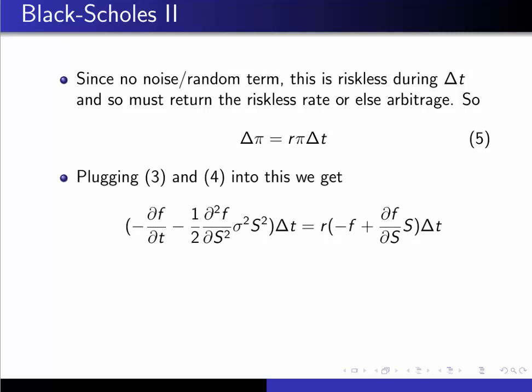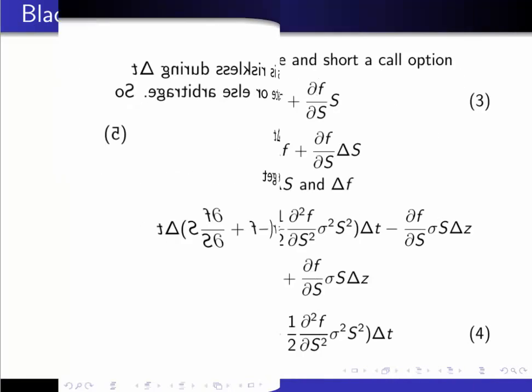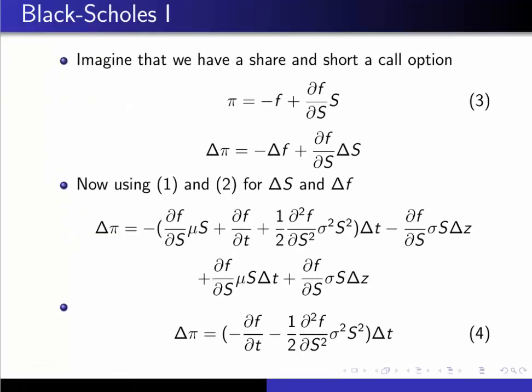Then plugging three and four into this - so three and four were expressions for Delta Pi and Pi - we end up with calculus. We'll just go back. Three is the expression for Pi, four is the expression for Delta Pi.